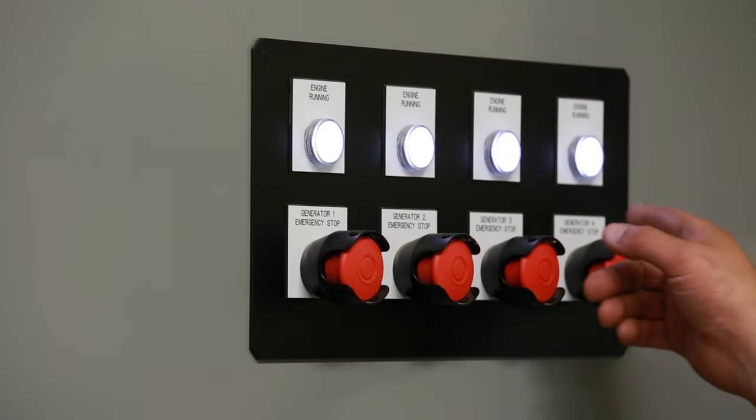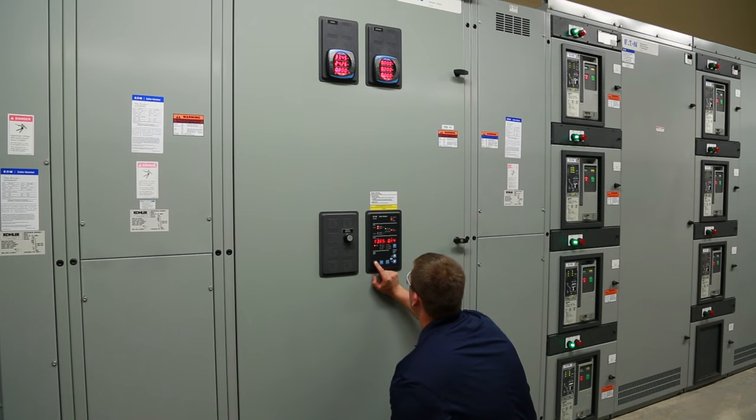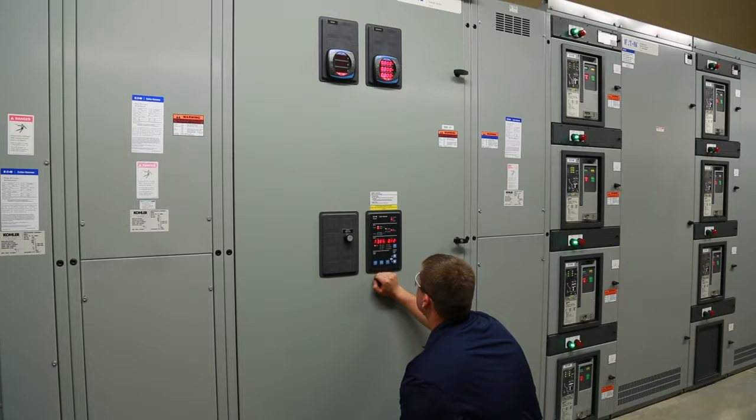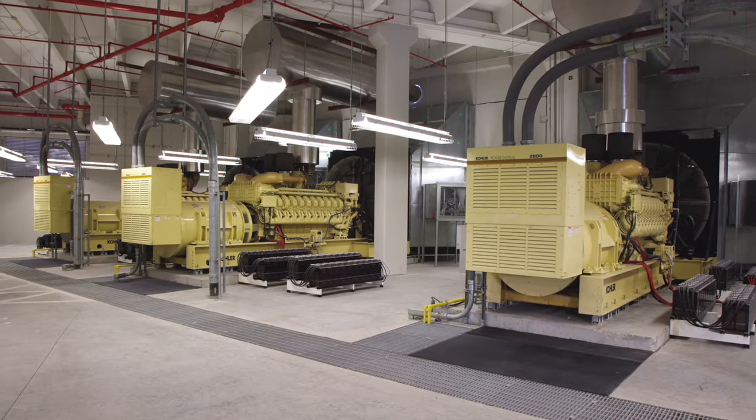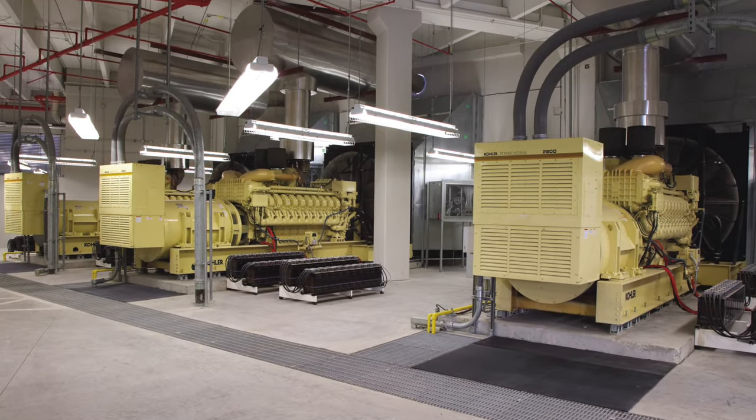Paralleling is the term given when two or more AC power systems are connected to a common bus bar. Paralleling is the chosen option for various generator system applications.